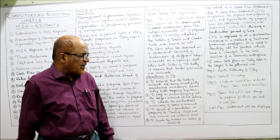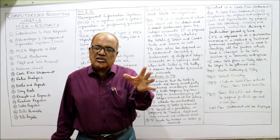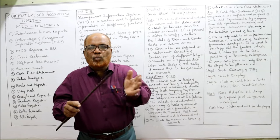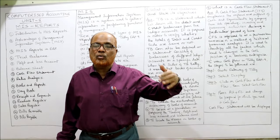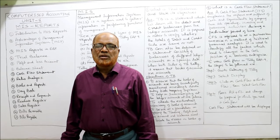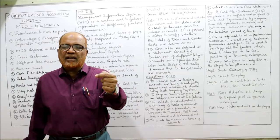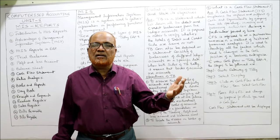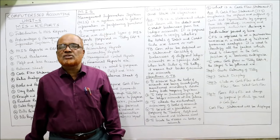The fourth objective of the trial balance is to serve as a foundation for preparing the trading profit and loss account and balance sheet. By taking all trial balance items we can prepare these financial statements; without a trial balance we would have to go to the ledger repeatedly for each item. The fifth objective is to locate errors in the books of accounts — if the trial balance does not agree, it indicates errors, which must be found, rectified, and then the financial statements prepared.